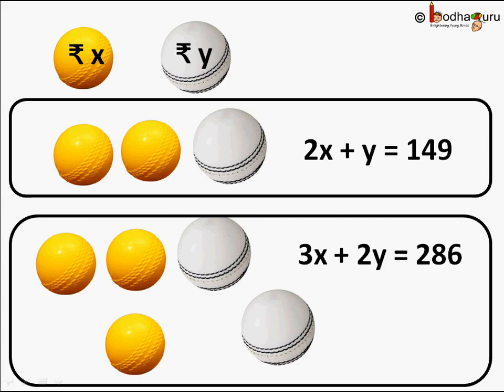Remember the variables X and Y are same for both the equations. It's the coefficients that are changing. The price of yellow rubber ball and white leather ball is same in both the packs. Just the pack composition is different.